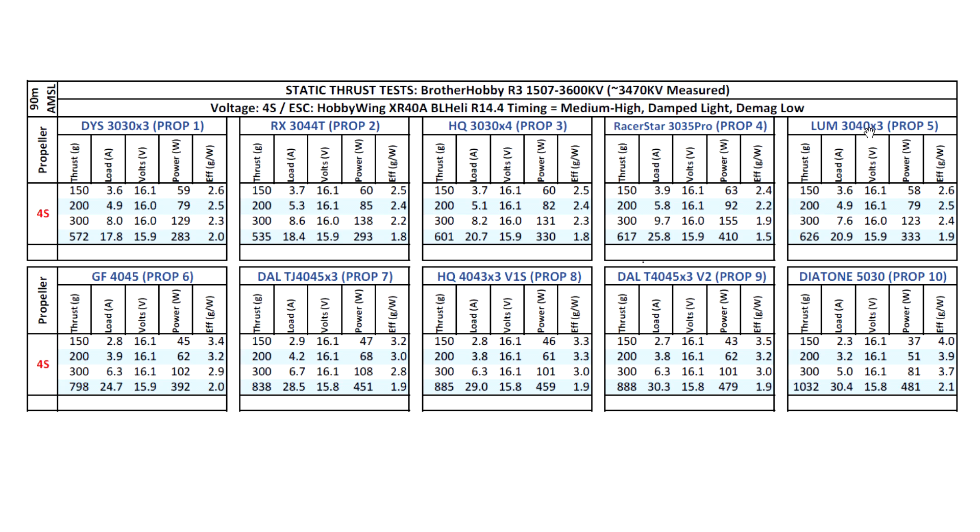And as we move on to 4 inch, some pretty good numbers, pretty much 800 grams across the board and almost 900 out of the HQ 4043 and the Dal T4045x3, which are two popular props I think, these two props, people are using them with these motors. And with the 5030 prop, the motor is breaking the 1kg mark, so the motor is performing quite well I think, and it should compare favorably with the 1407.